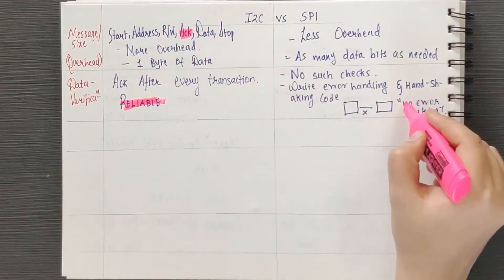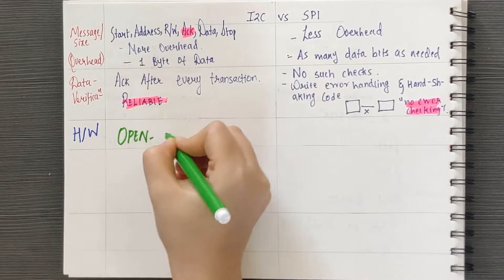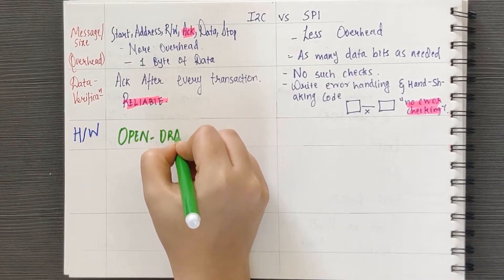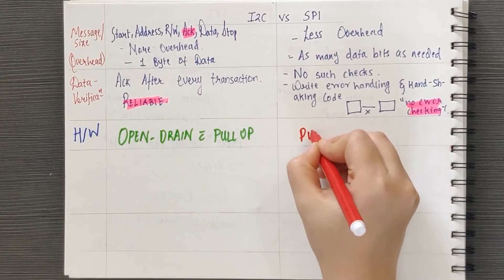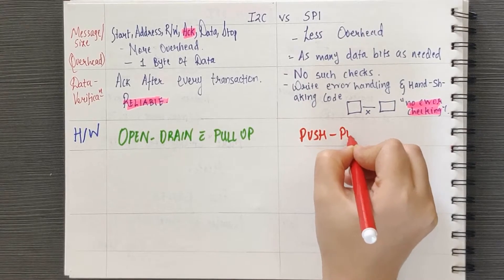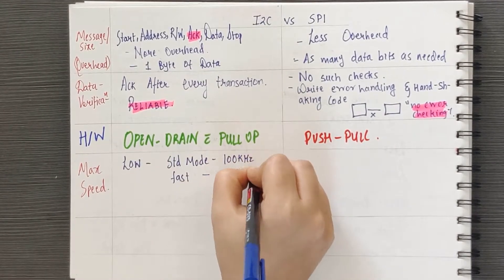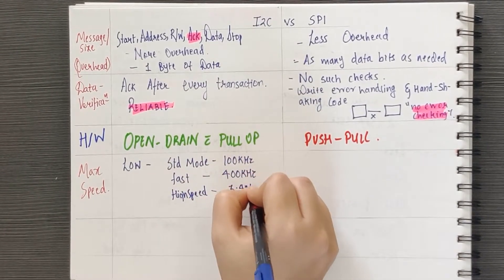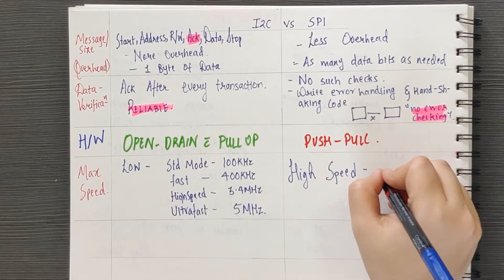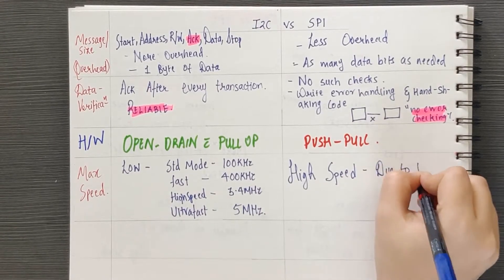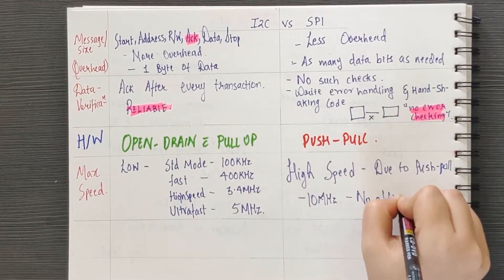Now let's shift our focus to the hardware and understand its implications. First, SPI uses push-pull design for MOSI and MISO pins. I2C uses open drain design with a pull-up resistor. Open drain has its advantages, but it sets a limit on the maximum achievable speed. SPI offers more speed in the range of 10MHz or more. There is no official limit on the speed in SPI, and this speed is due to the push-pull configuration. Maximum attainable speeds in I2C are in the range of 5MHz for ultra-fast mode. Different modes have different speeds.